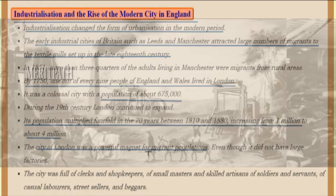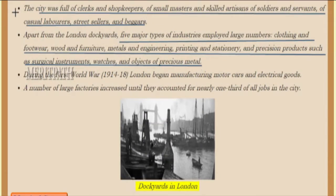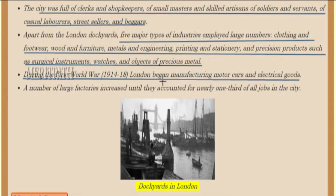During the 19th century, London continued to expand. Its population multiplied fourfold in the 70 years between 1810 and 1880, increasing from one million. The city was full of clerks and shopkeepers, small masters and skilled artisans, soldiers and servants, casual laborers, street sellers, and beggars. Apart from the London dockyards, five major types of industries employed large numbers of people: clothing, footwear, wood furniture, metals, engineering, printing, stationery, and precision products such as surgical instruments, watches, and objects of precious metal.